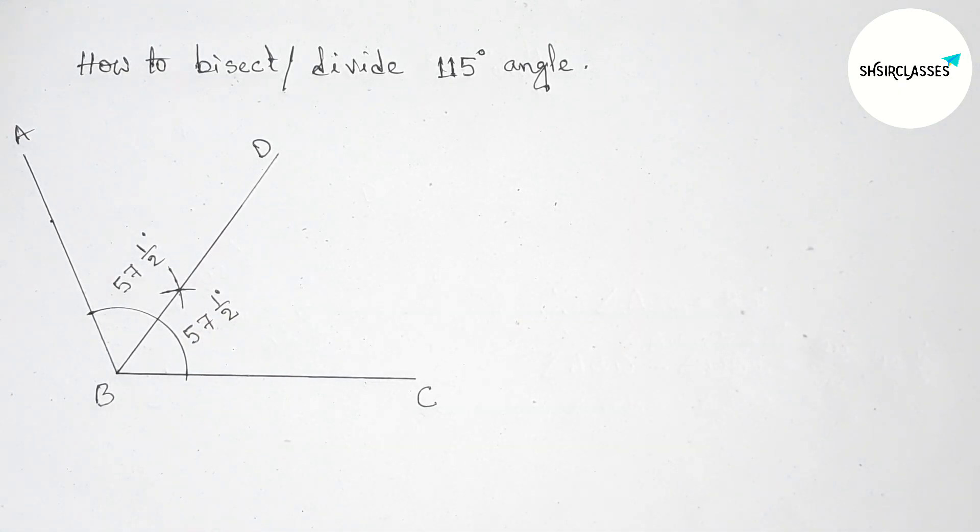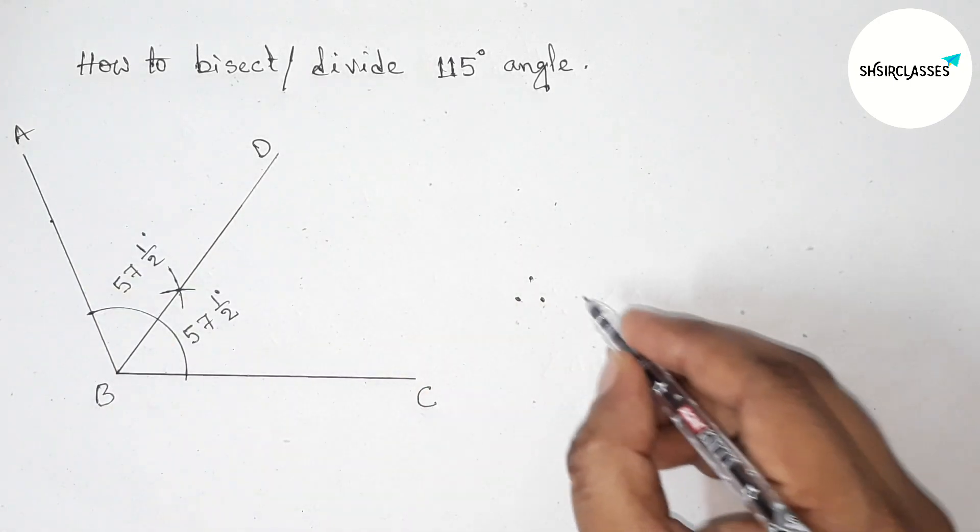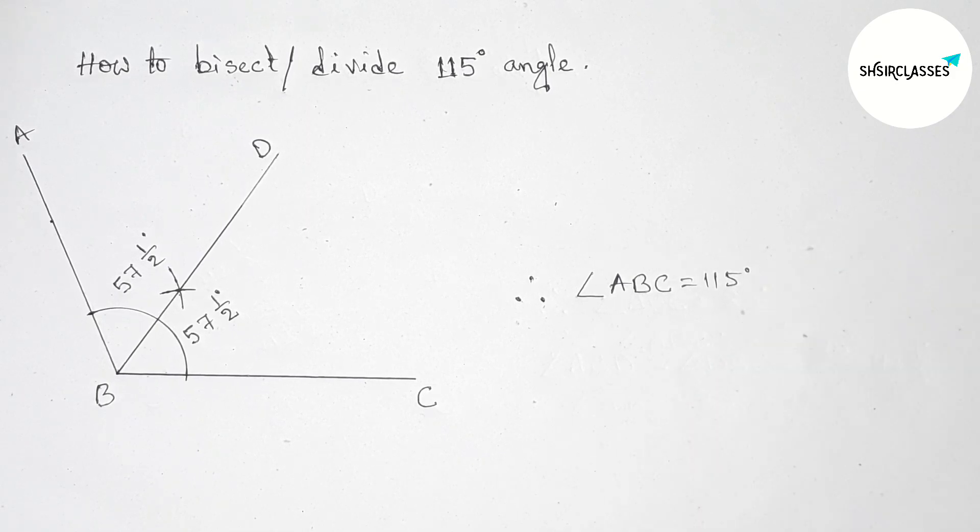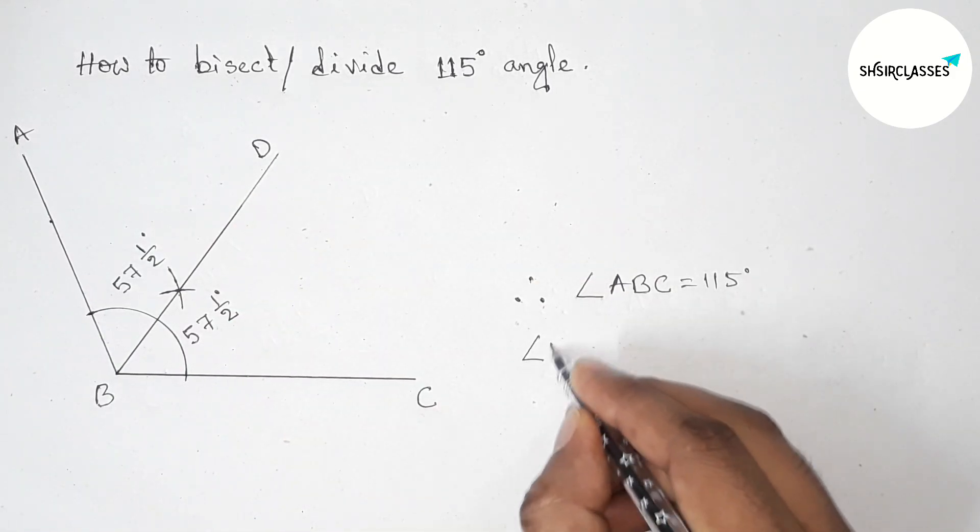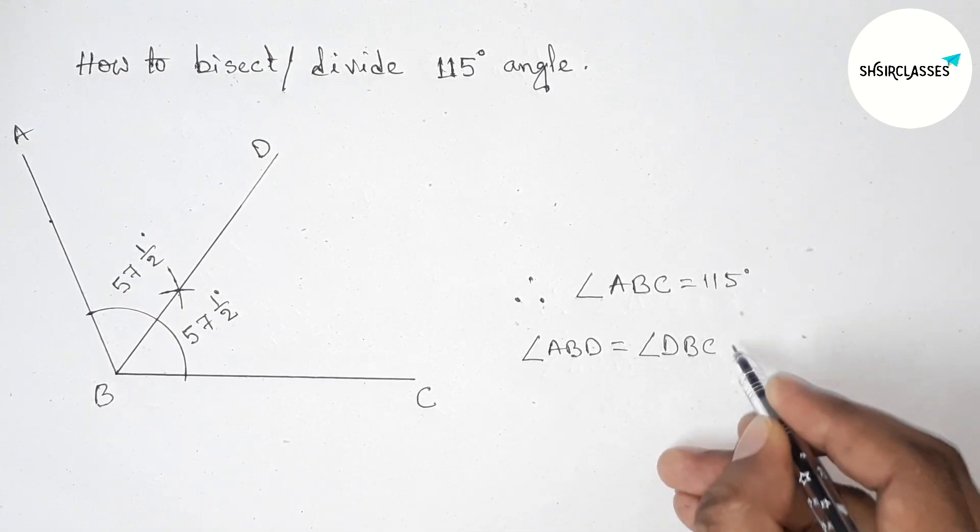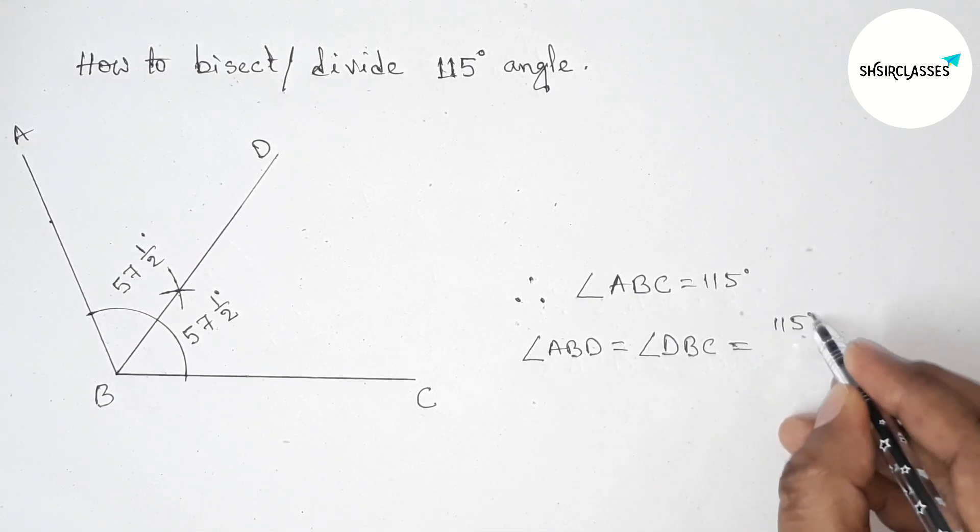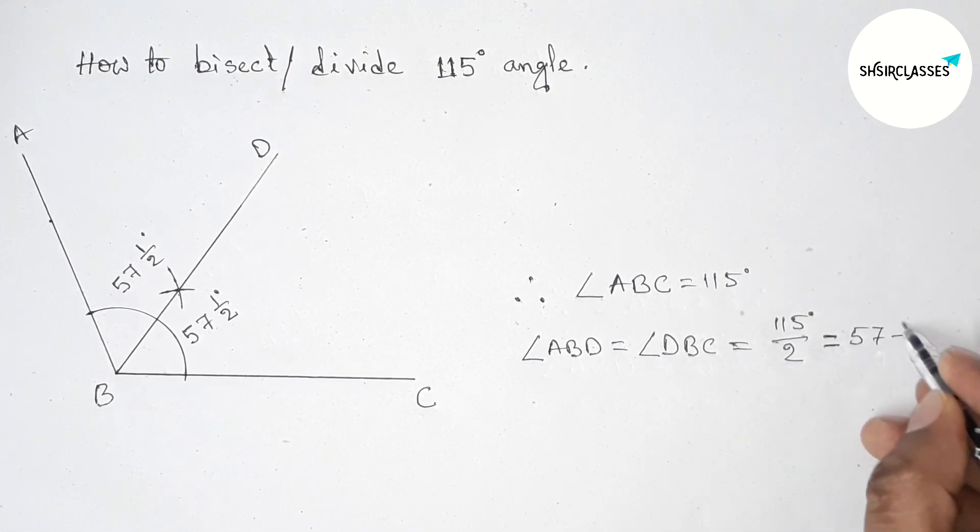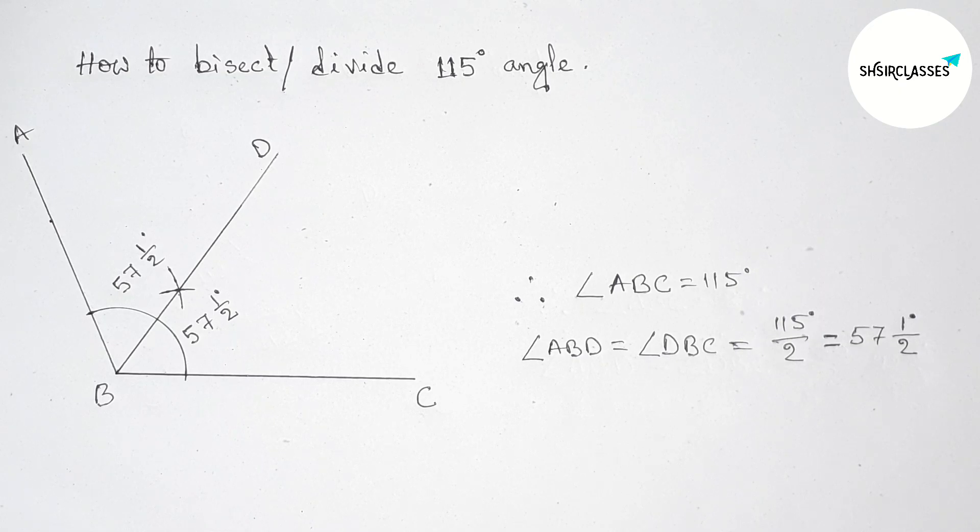Therefore angle ABC, that is 115 degrees, and angle ABD is equal with angle DBC and both are 115 degrees by 2, this is 57 and 1 by 2 degrees. So that's all, thanks for watching.